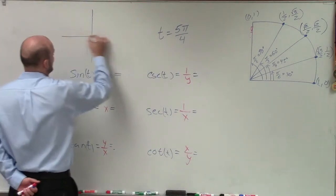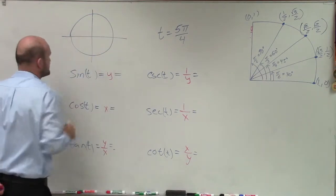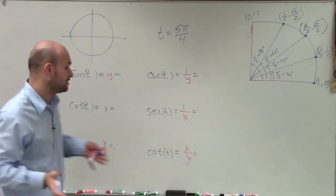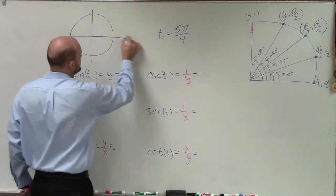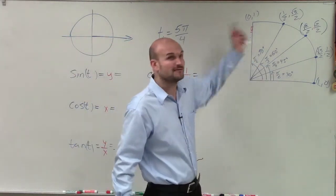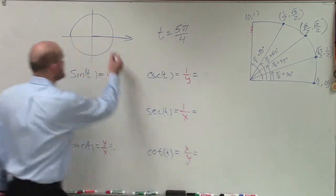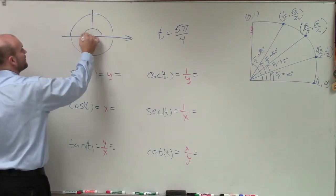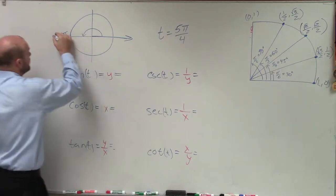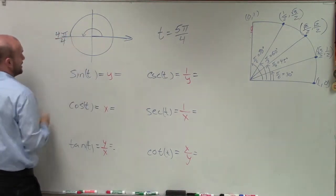Let's go ahead and determine where 5 pi over 4 is. If I'm going to graph 5 pi over 4, we know that we're always going to start here at our initial side. We know that pi over 4 is in the first quadrant, but 5 pi over 4 is not. We know halfway around it's going to be pi. Since I'm taking a denominator of 4, I'm going to rewrite that as 4 pi over 4.